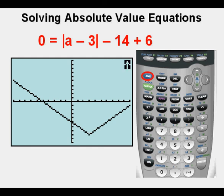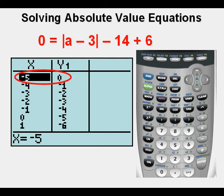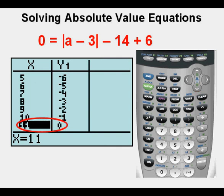We go to our table view by pressing second, then graph to see that table. And we scroll up to see the solution to the left. We verify that negative 5 is one solution because it's on the x axis where y equals 0. We scroll down to see the solution on the right. And we see that 11 is that other solution. So here's our set of solutions. A equals negative 5 and 11.